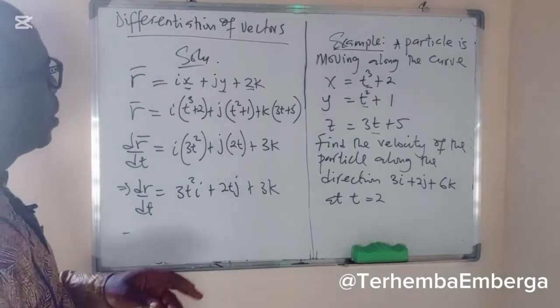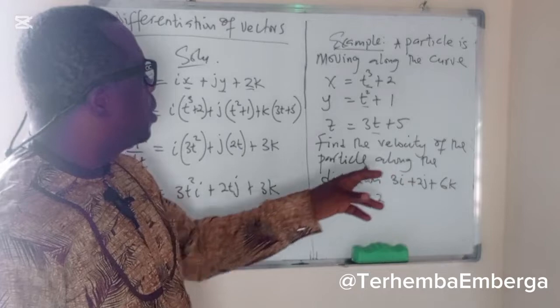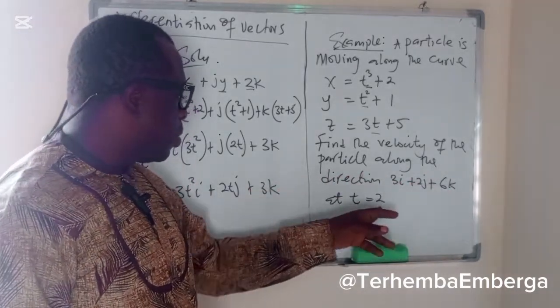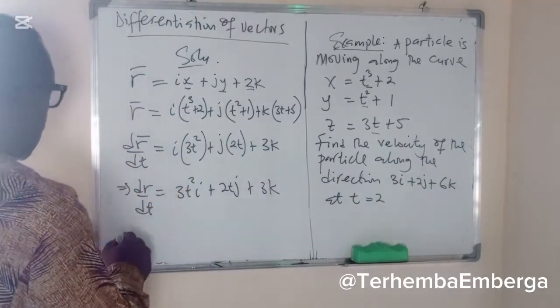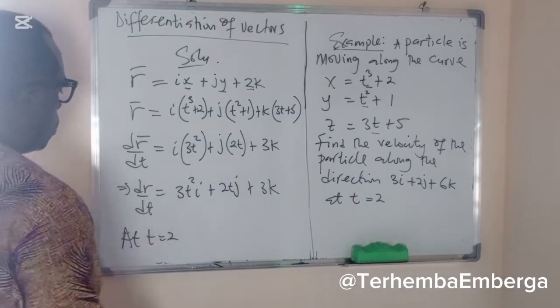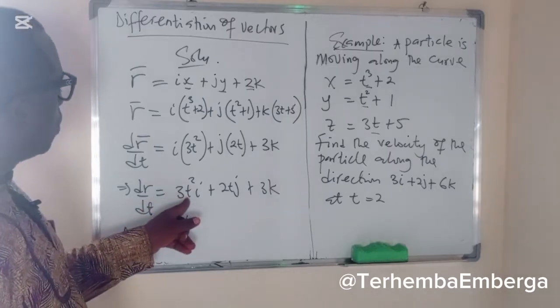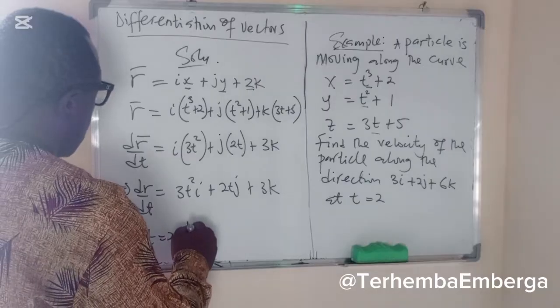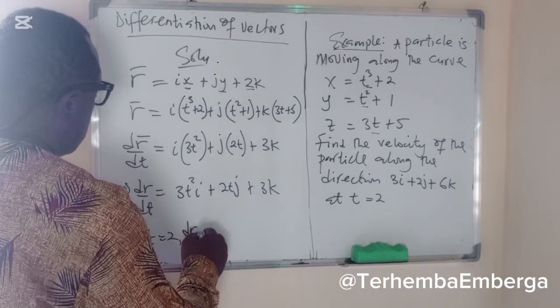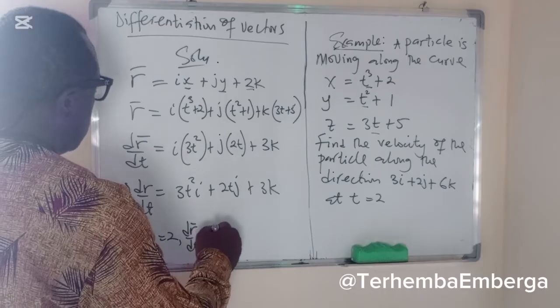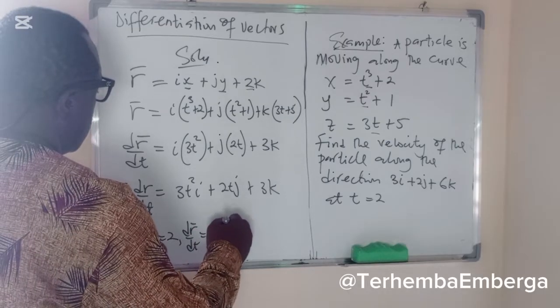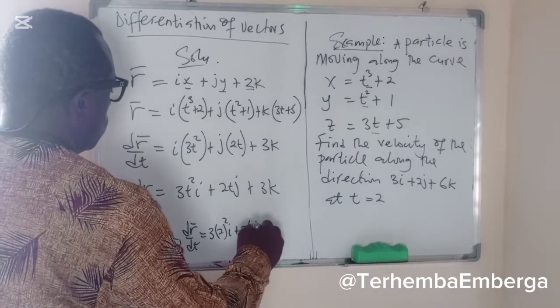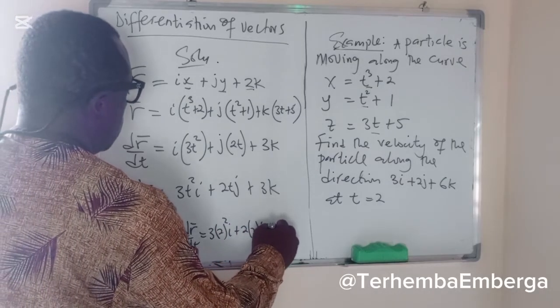But the question here is, find the velocity of the particle along the direction 3i plus 2j plus 6k at t equal to 2. So, at t equal to 2, we'll substitute the value of t. So this becomes dr/dt equal to 3 times 2 squared i plus 2 times 2j plus 3k.